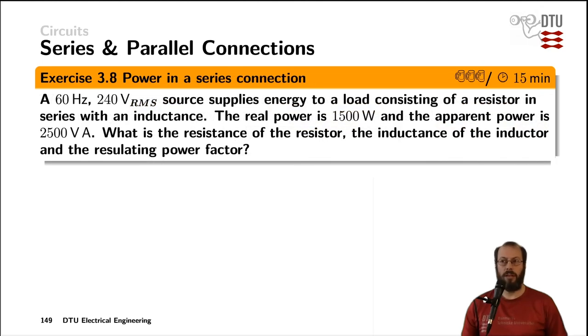In the last exercise, we have the power reading from a power meter - the real power and the apparent power delivered by this voltage source. We want to know what is loading the source, and we want to model it as a resistor in series with an inductance. What is the value of that resistor, the value of the inductor, and the resulting power factor?